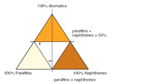To establish the region for Type 1 crude oils, we need a third boundary line. You see here the line designating paraffin content greater than 40%. To the left of that line in the triangle, the paraffin content is greater than 40%.